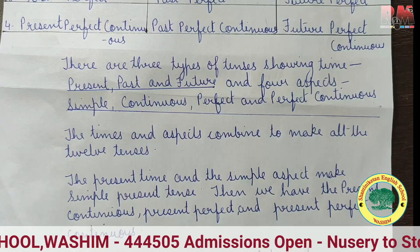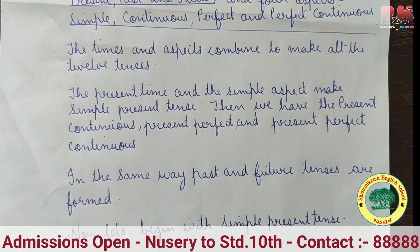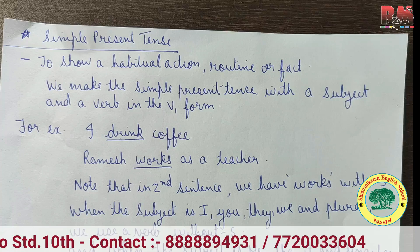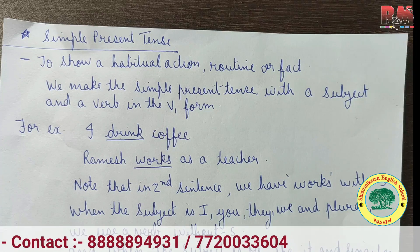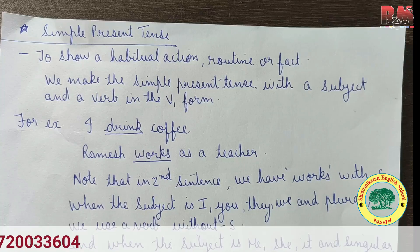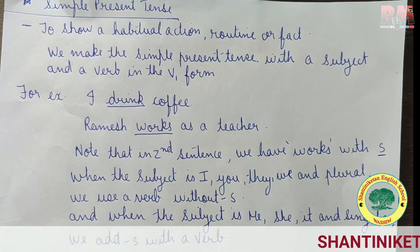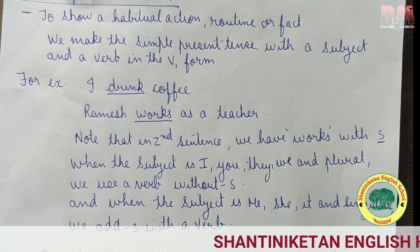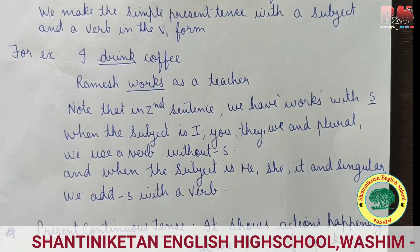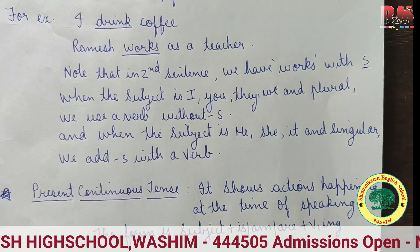Simple present tense shows a habitual action, routine, or fact. We make it with the subject and verb in its base form. For example: 'I drink coffee.' 'Ramesh works as a teacher.' Note that in the second sentence we have a verb with S. When the subject is I, you, they, we, or plural, we use a verb without S. When the subject is he, she, it, or singular, we add S to the verb.